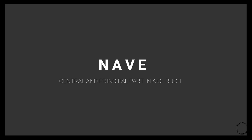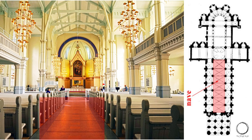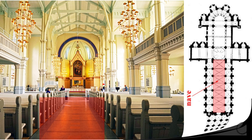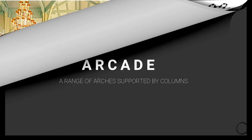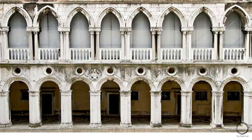Similarly, we also came across the term nave, which means the central and principal part of the church. Here we have the similar image of the church with the plan highlighting the nave — that is the central corridor which leads you towards the deities. Moving on, the next term is arcade, which means a range of arches supported by columns.